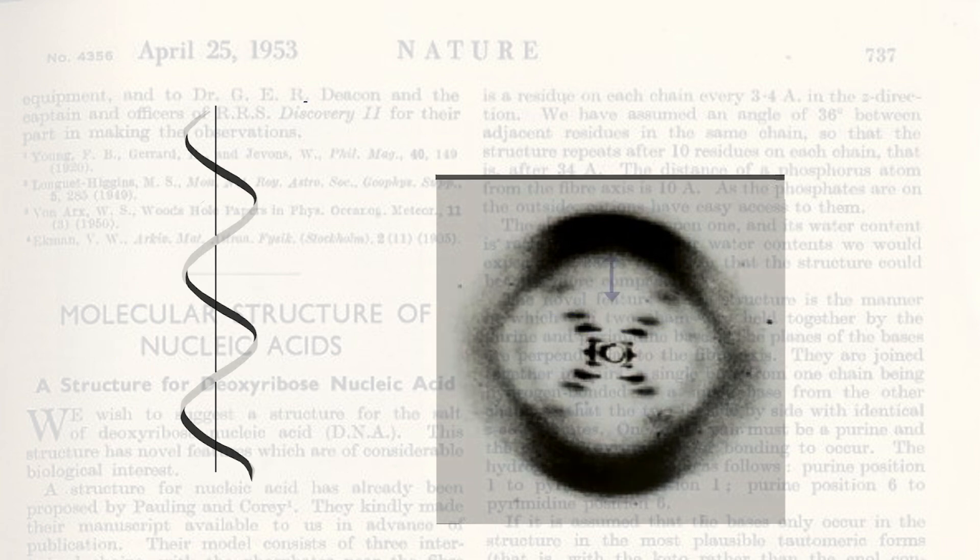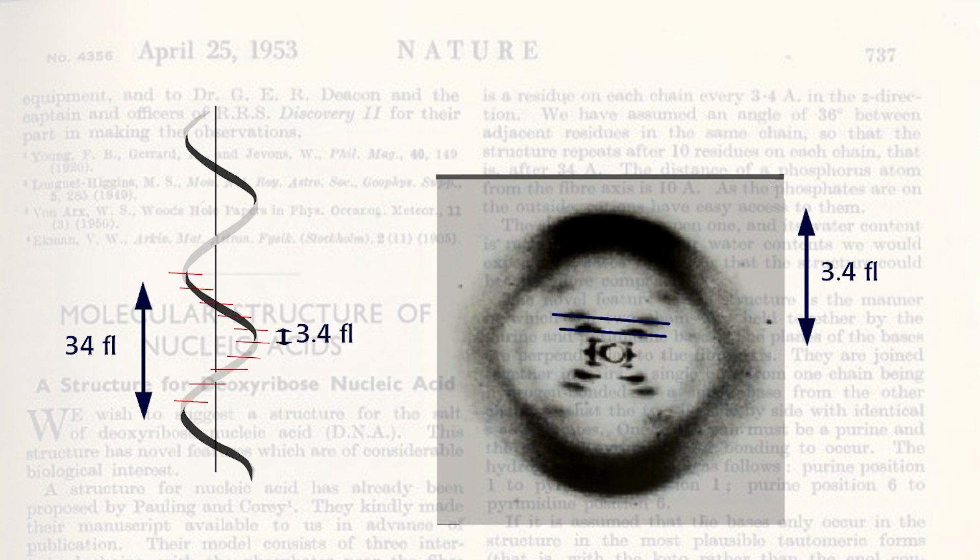Since they knew the height of one helical repeat, that is 34 angstroms, and they knew the distance between stacked base pairs, that is 3.4 angstroms, there must be 10 nucleotides per helical repeat.